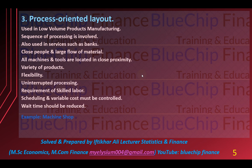Agar demand ziyada hai to us ki production bhi tez ki ja sakti hai, aur agar demand kam hai to production bhi kam ki ja sakti hai. Uninterrupted processing zaroori hai kyunke ek section se jab cheez taiyar ho ke doosre section mein jaye gi, agar ek section mein rukaawat aa jaye gi to poori ki poori processing ruk jaye gi. Is ke andar skilled labor ki aap ko zaroorat parti hai jo ek specific kaam mein skilled hote hain aur wo ek specific task perform karte hain aur phir apna finished task next section mein shift karte hain. Scheduling aur variable cost controlled honi chahiye.